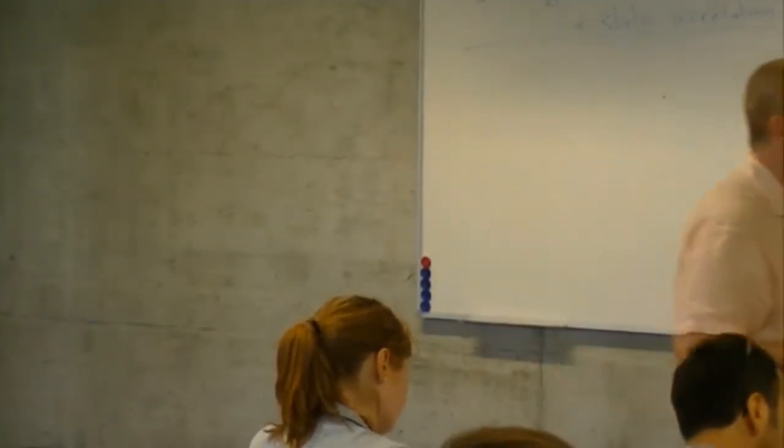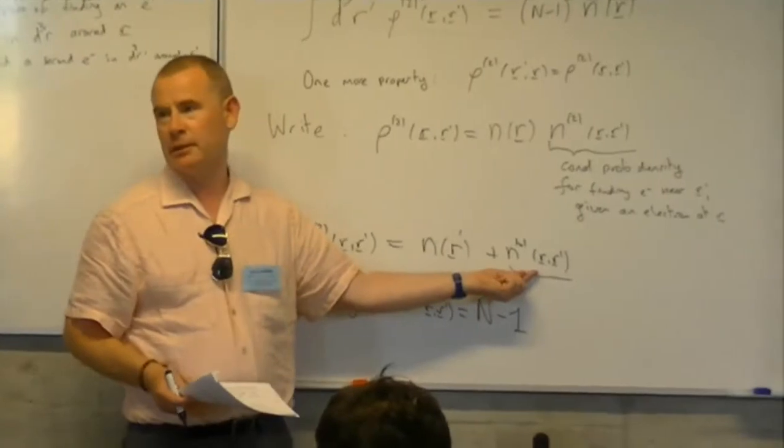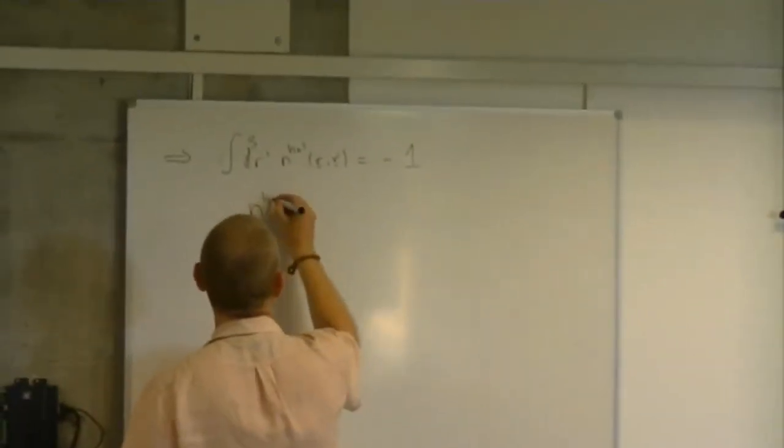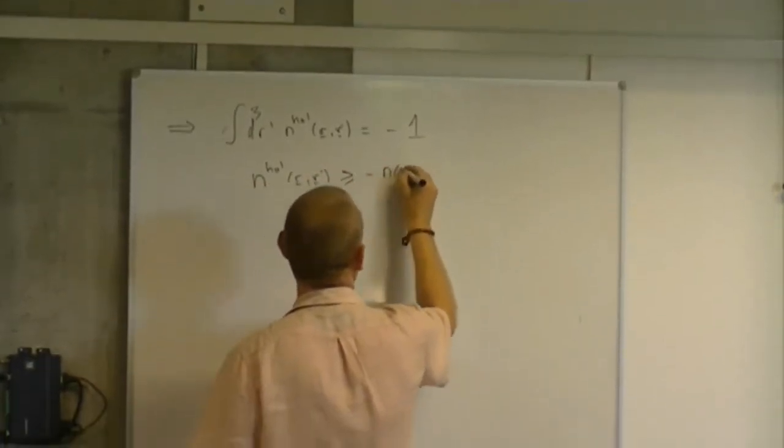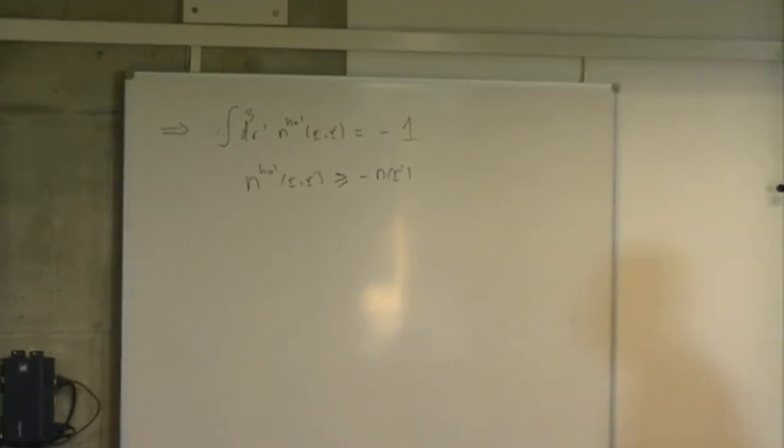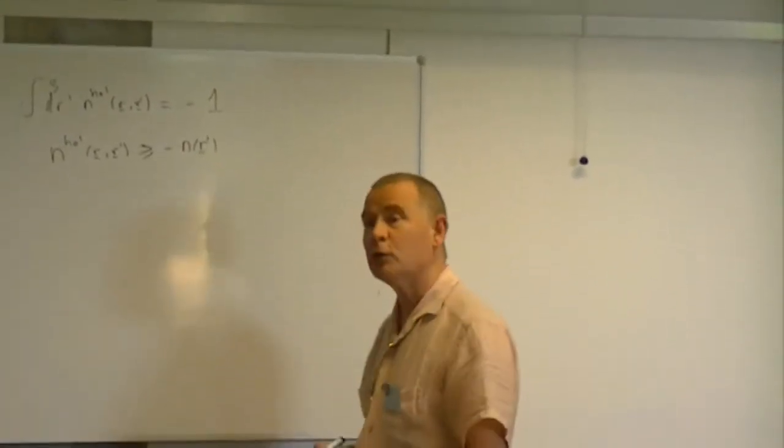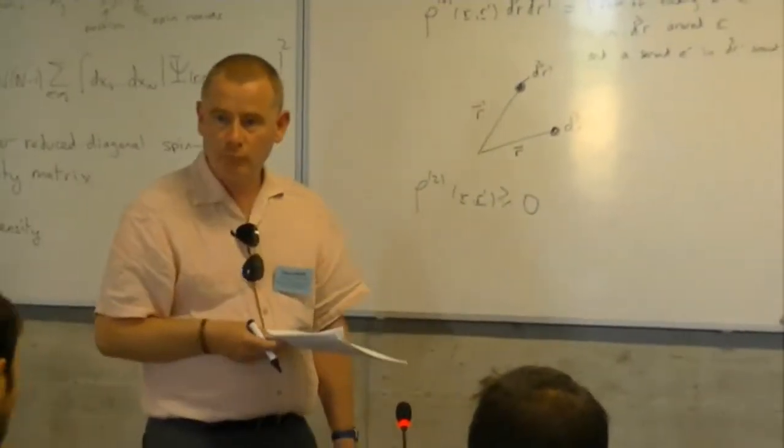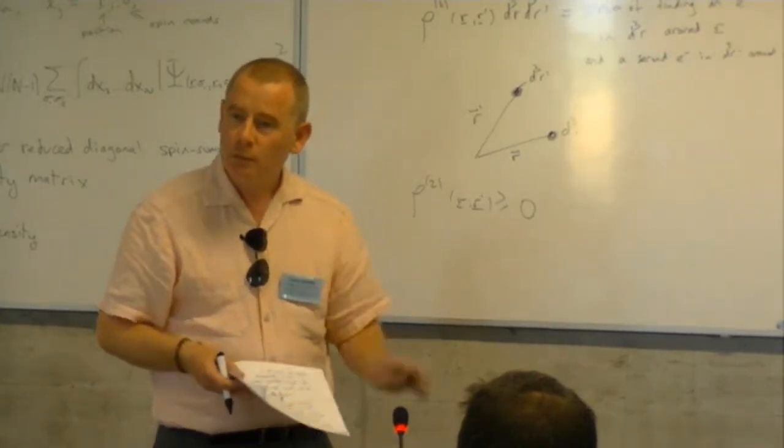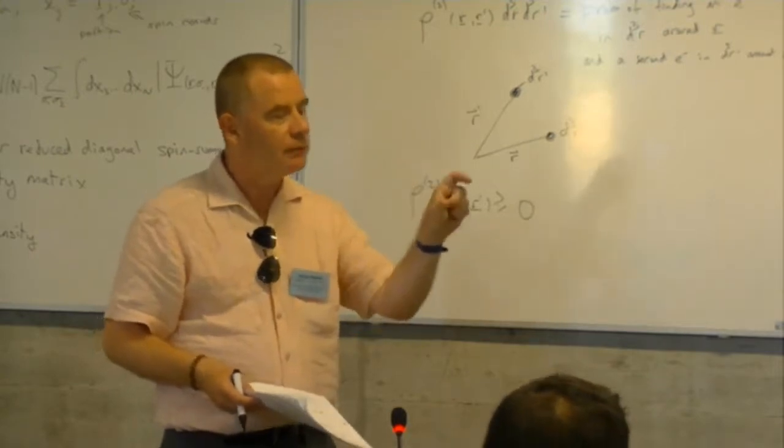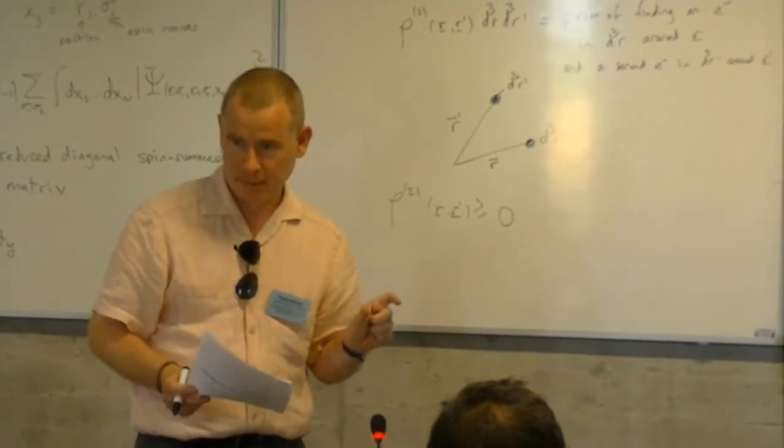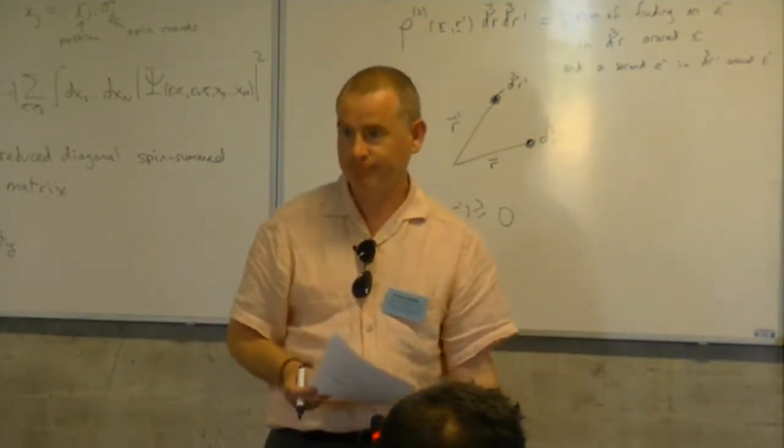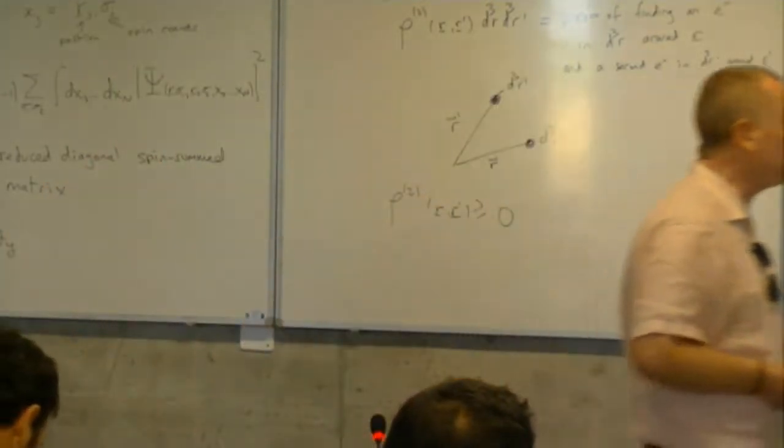Is the hole negative for all r-prime? No, it's just that it must integrate over r-prime to -1. To satisfy this condition, since we've already pulled out a factor of n of r, that means n-2 of r r-prime is n-1. This guy integrates to n, so this guy must integrate to -1. It is true that n hole must be greater than or equal to minus n of r-prime. That way, n-2 can never be negative.